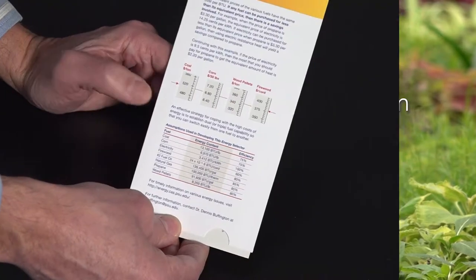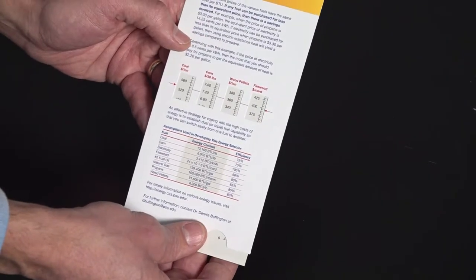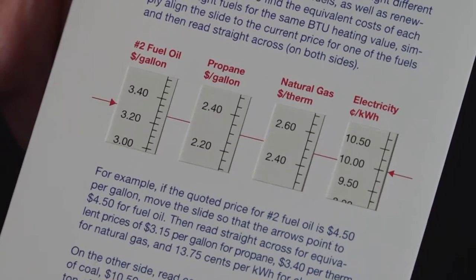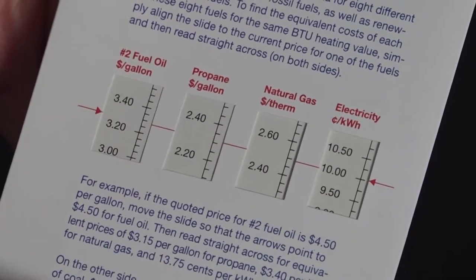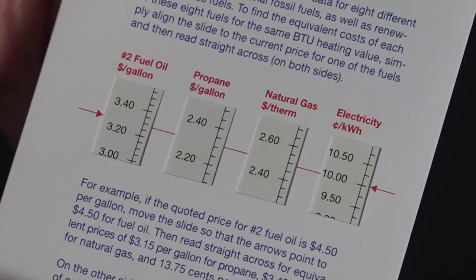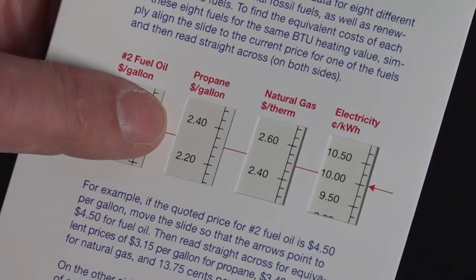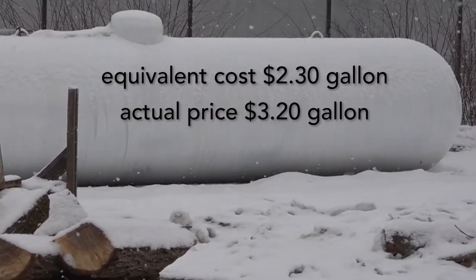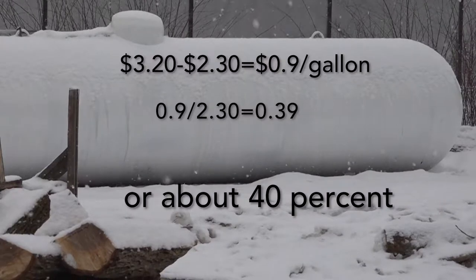Once you have your prices, you can slide the inner card until the arrow on one side of the windows points to the price for that fuel. Let's use electricity as our reference and slide the inner card until the electricity window points to 10.00. The prices shown in all of the other windows then give the equivalent cost of those other heating fuels — the cost you would have to pay to get the same amount of useful heat per dollar. The energy selector now shows that the equivalent cost for propane is about $2.30 per gallon. Thus, if propane were available for less than $2.30 per gallon, it would be cheaper to use than electricity. But the actual price of propane for the greenhouse grower is $3.20 per gallon — much more. In fact, propane would be about 40% more expensive to use than electricity in this example.